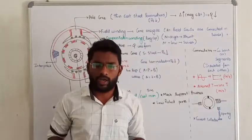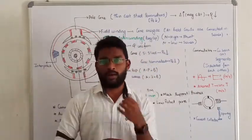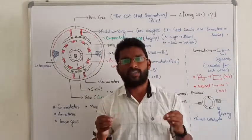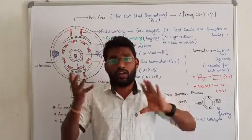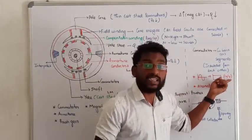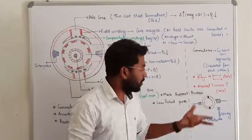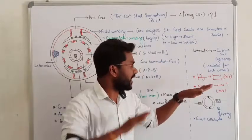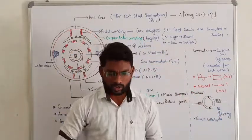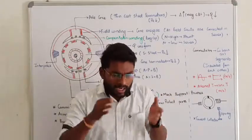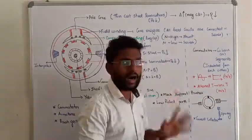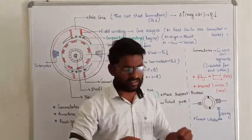What is the purpose of the commutator? In the case of a generator, the armature conductors generate alternating current internally, and the commutator converts this alternating current into DC — that is, unidirectional current — at the output. In the case of a motor, it acts in the reverse way. So effectively, the commutator is called a mechanical rectifier because it rectifies or converts energy from AC to DC and DC to AC. This is the heart and the crucial part of the DC machine — it is too complicated.